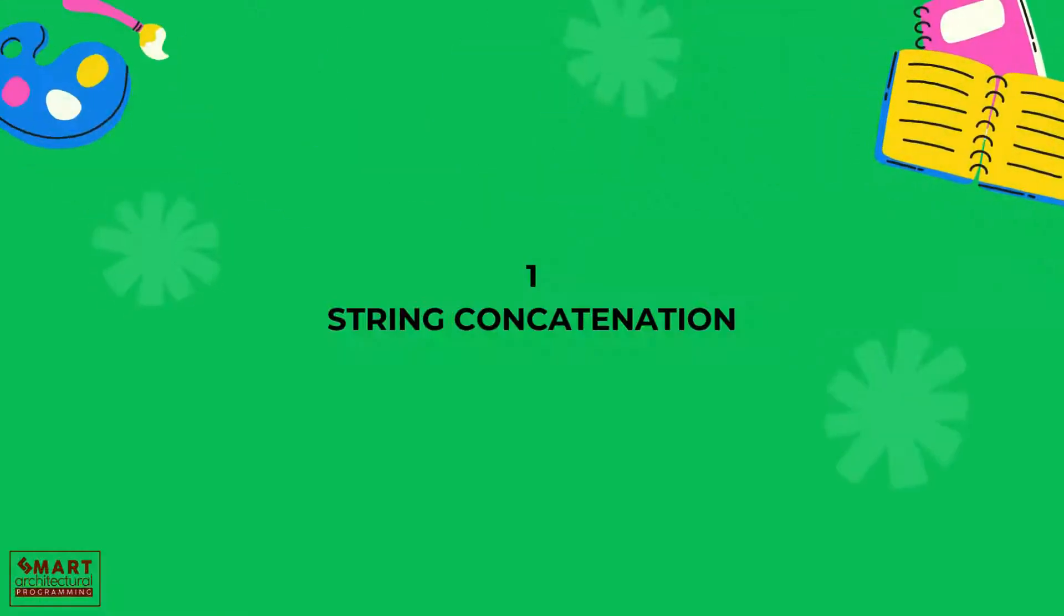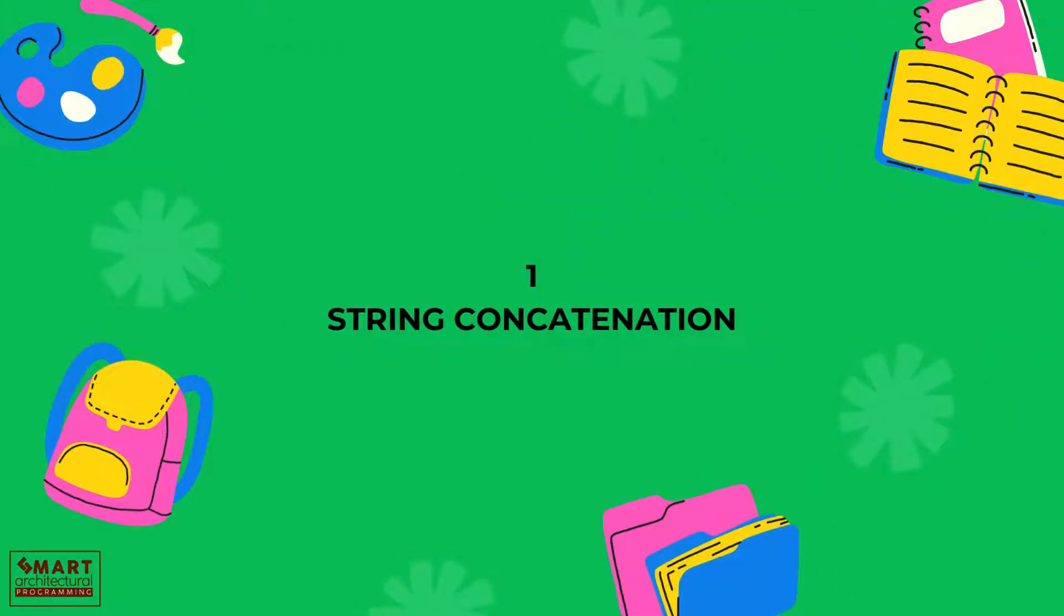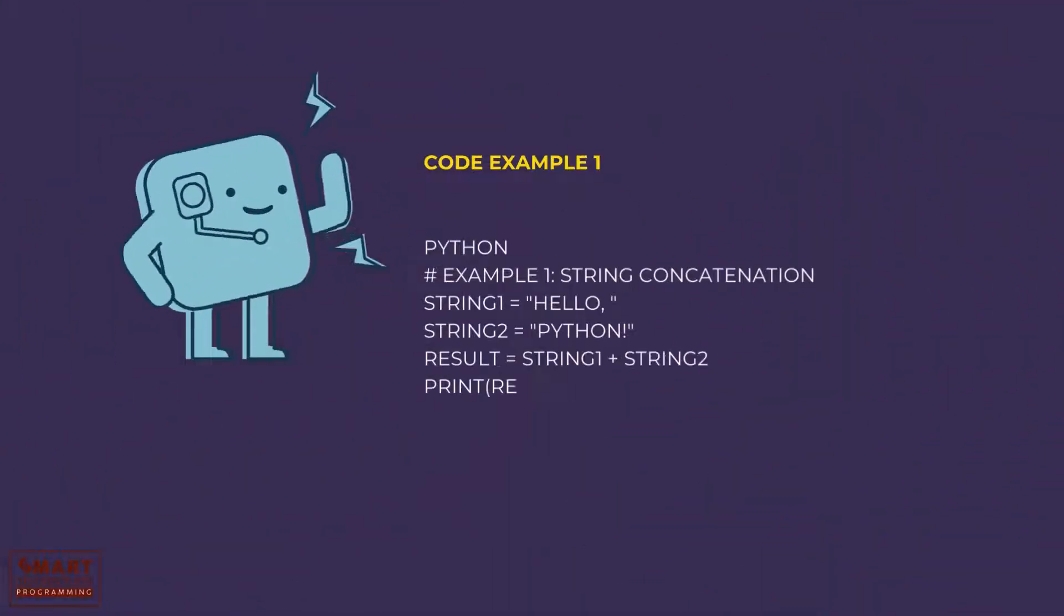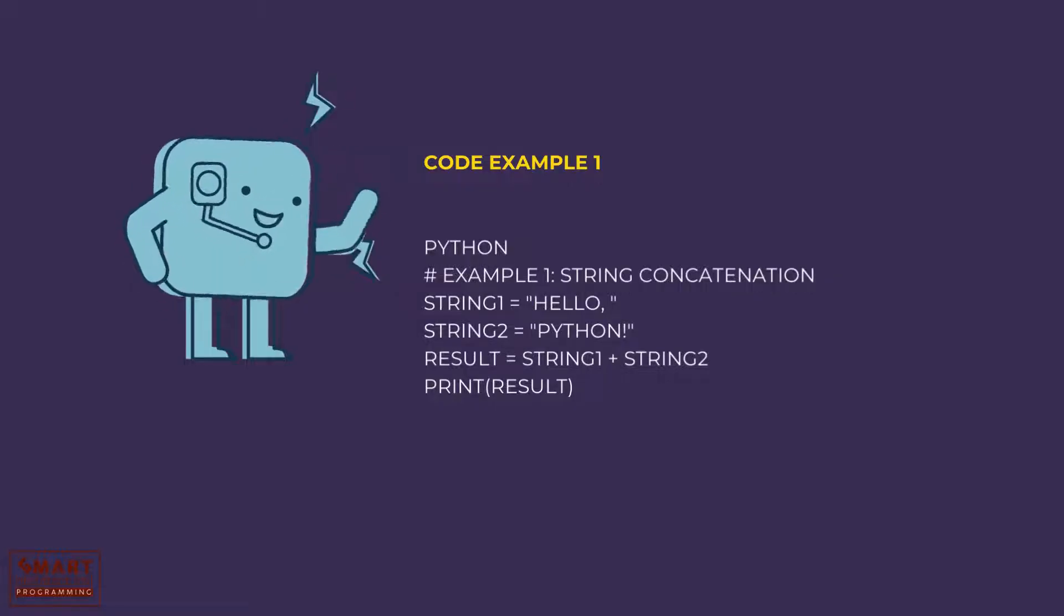Let's start with string concatenation. Concatenation means joining two or more strings together. Example 1: String concatenation. string1 = 'hello', string2 = 'Python', result = string1 + string2, print(result).